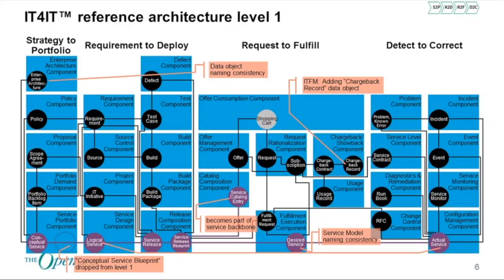The changes include: we changed some names of data objects — it's now called 'enterprise architecture' in the architecture component. We changed 'logical service blueprint' to just 'logical service,' as the blueprint concept confused a lot of people, though the blueprint still exists at level two. We added service model consistency around 'design service' and 'actual service' — it was called 'actual service CI,' and that CI concept was really a burden. The service catalog entry has also become part of the service backbone.